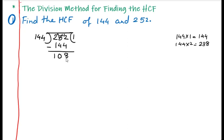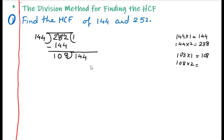As we are finding the HCF, this remainder 108 will now become the new divisor. We draw a new division sign. The previous divisor, 144, will now become the new dividend. Now we say 108's table: 108 ones are 108. 108 twos are: 100 doubled is 200, 8 doubled is 16, so 216.